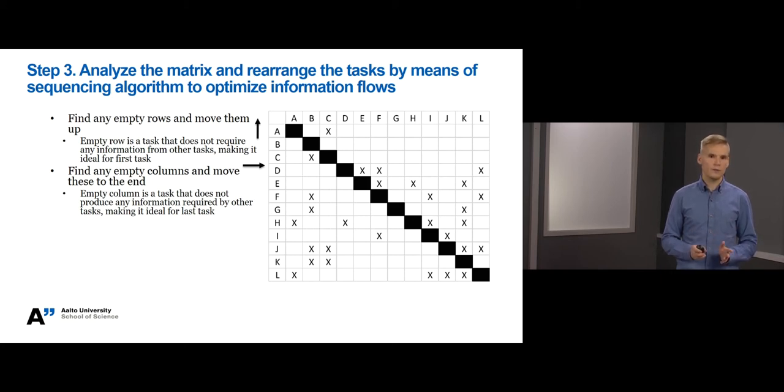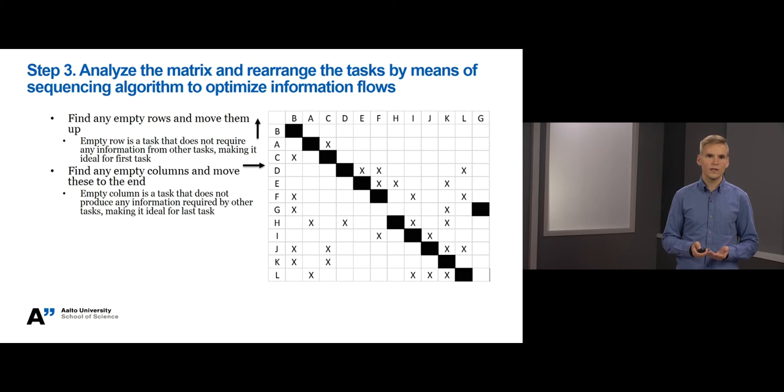In this imaginary project, we can see that task B requires no information from other tasks. So let's move it up as the first task. Remember always to move the respective column so that the diagonal follows correctly. We can also see that task G produces no information to other tasks, so let's move it to the end. Remember always to move the respective row as well so that the diagonal follows correctly.